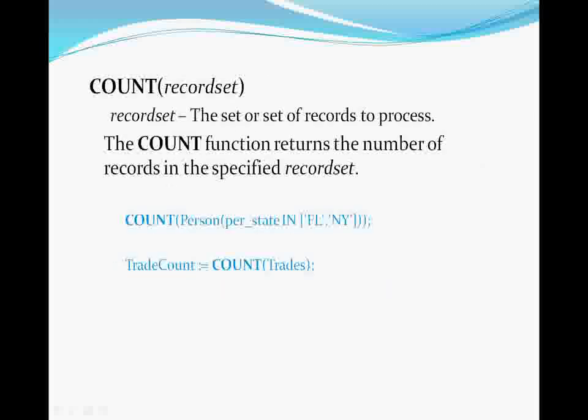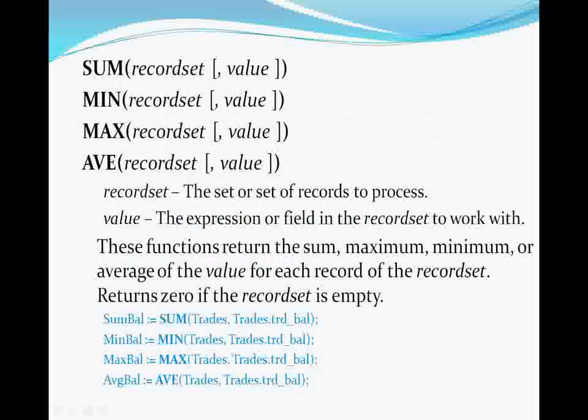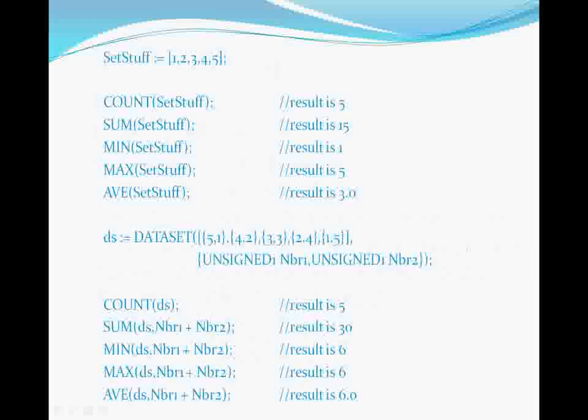The COUNT function does a simple count of records in the record set. And the other aggregate functions — SUM, MIN, MAX, and AVERAGE — all operate on the records in the record set specified as the first parameter and determine their result based on the value parameter, usually a field in the record set, but may be any expression that results in a single value. These also have a one-parameter form that is designed to operate only on sets. Here, all five aggregate functions are used in both their forms.